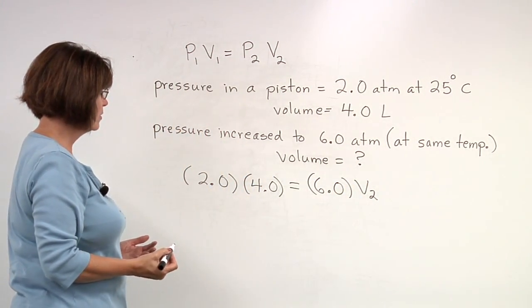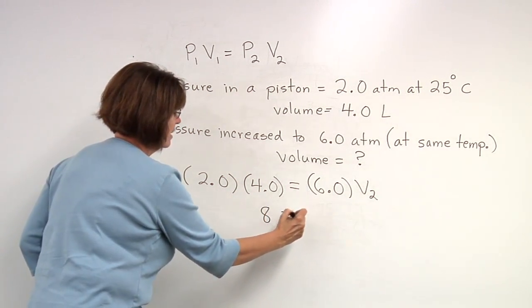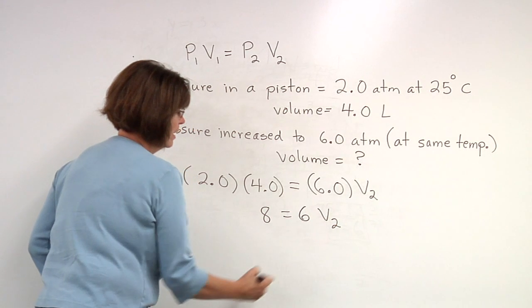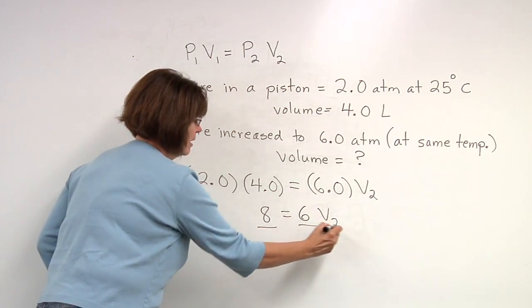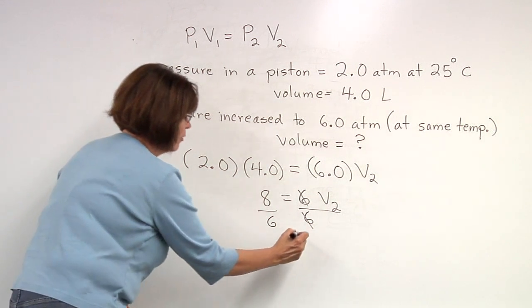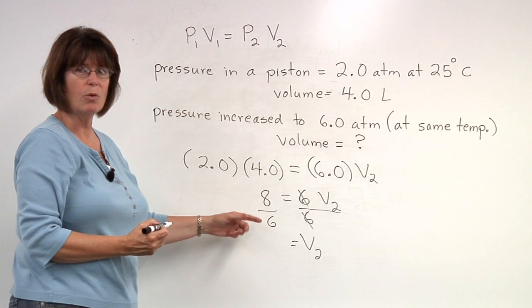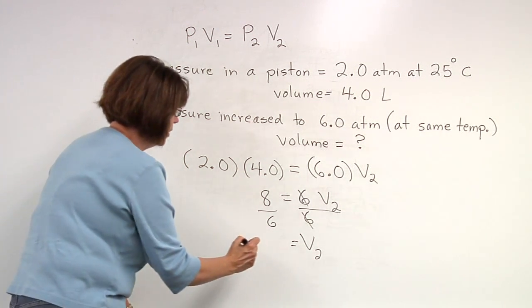We'll rearrange this equation. Four times two is eight, equals six times volume two. Divide by six. That will make these cancel out. Volume two is eight-sixths, or one and two-sixths, one and a third.